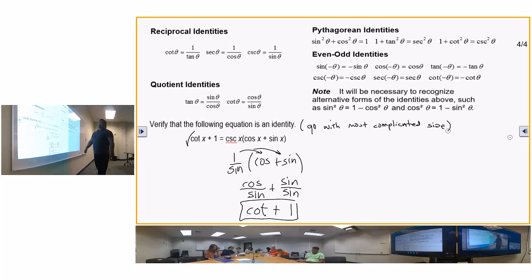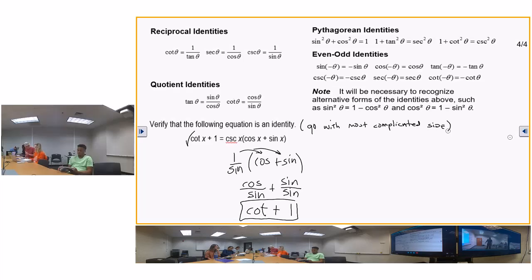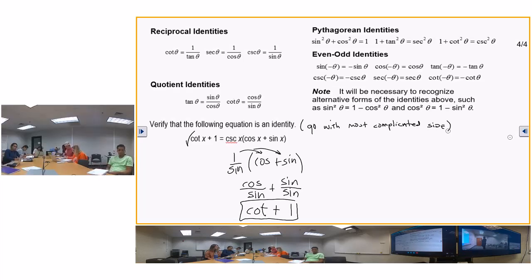And that's going to give us cosine over sine is cotangent plus one. So when you're dealing with the identities, which means that you're proving, you might want to use a rule: go with the most complicated side.